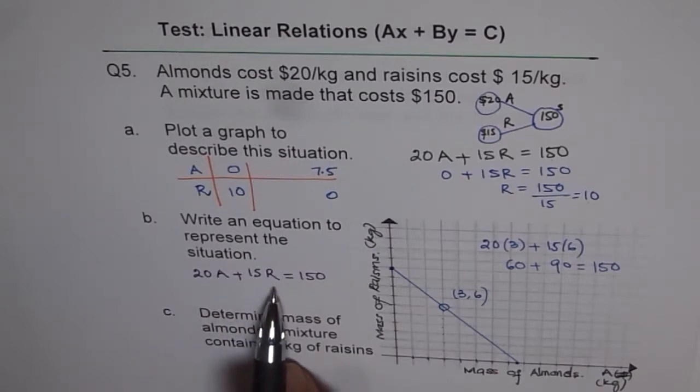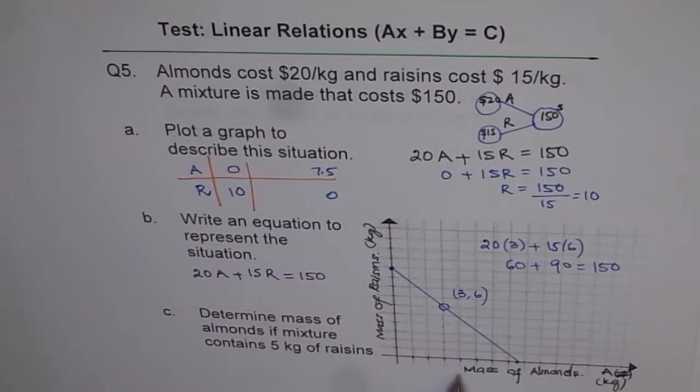So we have two variables and both of them are dependent on one another. And this equation gives us a line, a straight line, which can be plotted on a graph.